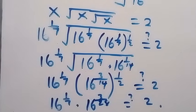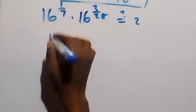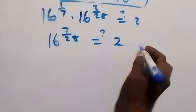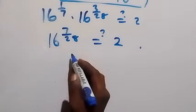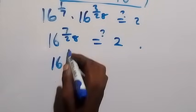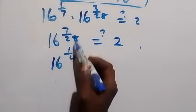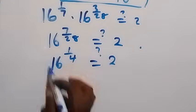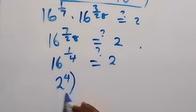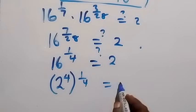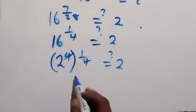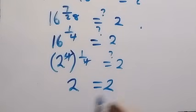We have 16 raised to power 7 over 28 equals 2. We can reduce 7 over 28 to 1 over 4, so we have 16 raised to power 1 over 4 equals 2. Now 16 can be written as 2 to the power 4, raised to the power 1 over 4. When we multiply the powers, 4 times 1 over 4 gives 1, so we get 2 equals 2 — the left hand side equals the right hand side.